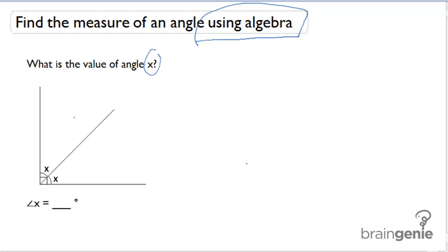So the first thing we should do is look in this problem for given information. The angle here, this angle that is unnamed, has a square on the inside which shows that it is a 90 degree angle. So because of this square, we know this full angle measures 90 degrees.